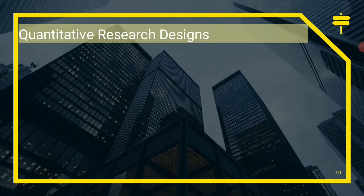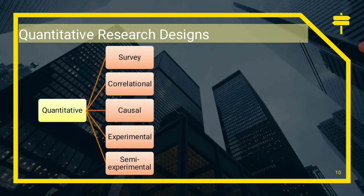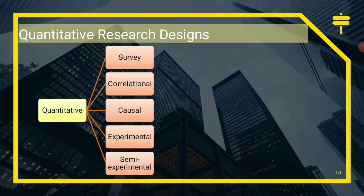Now let us deal with quantitative research designs. We have six: survey, correlational, causal, experimental, semi-experimental or quasi-experimental, and regressional. Regressional is sometimes a combination of correlational and causal with additional statistical tools used for interpretation, analysis, and modeling. Quantitative research designs utilize numbers, unlike qualitative which uses narratives, documents, and field notes.